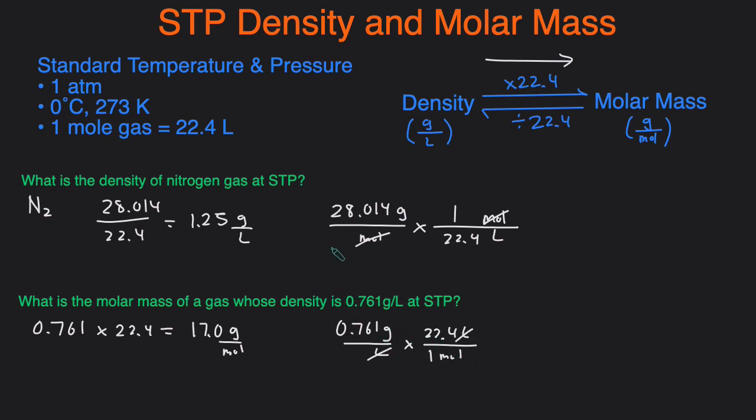So that's how you can easily find the density and the molar mass of a gas at STP. If you have density just multiply by 22.4 to get molar mass, and if you have molar mass divide by 22.4 to get density.